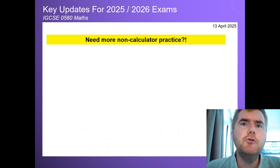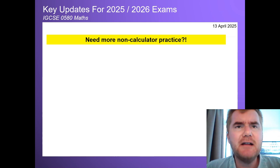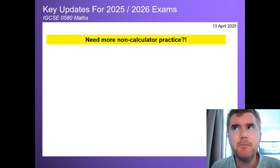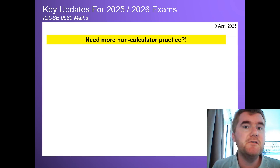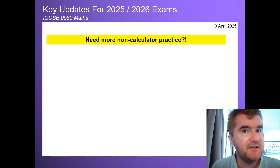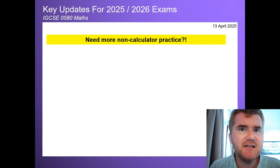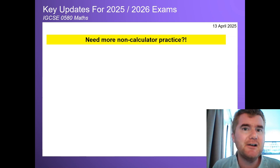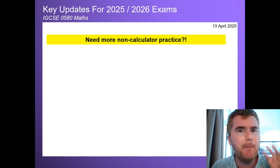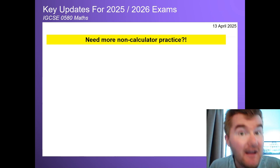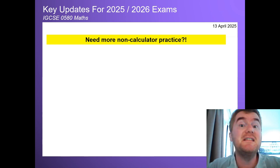If you need more non-calculator practice and you're not quite ready for past papers yet, but you just want to build up your confidence without a calculator, then check out the video right in front of you — these are my non-calculator sprints. It's a quick 20 to 25 minute blast that gets your confidence really sky high for when you go into that paper two.